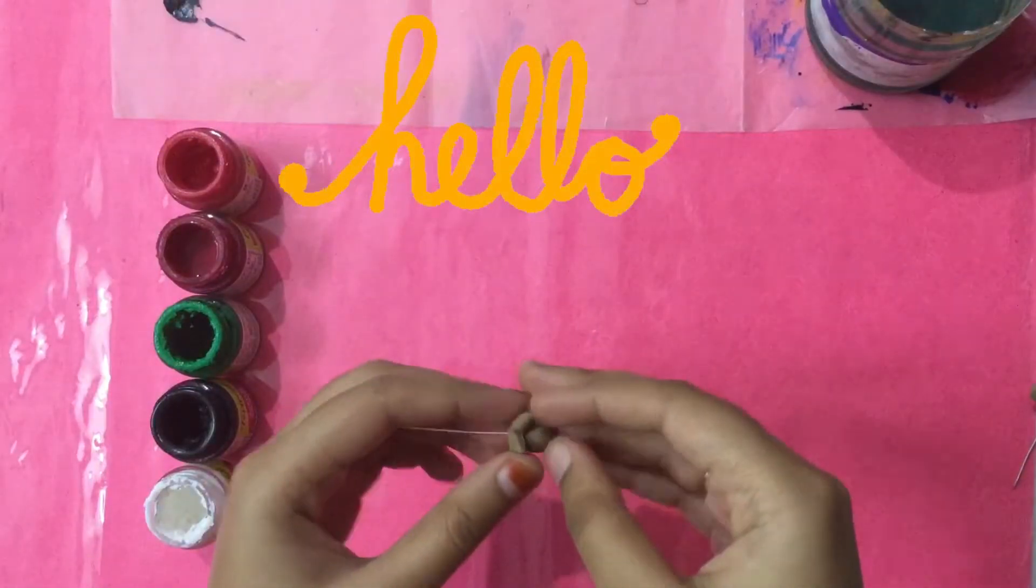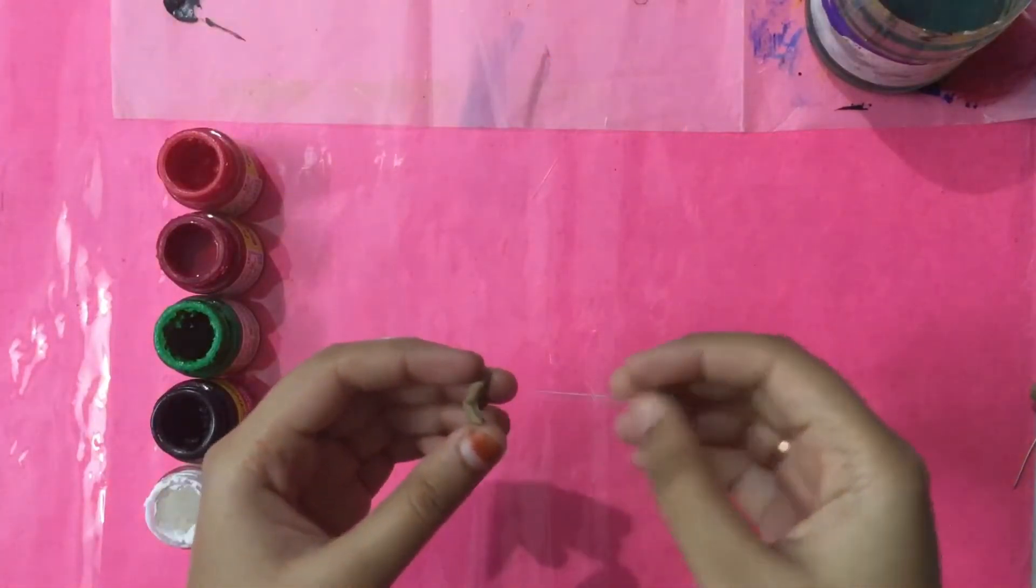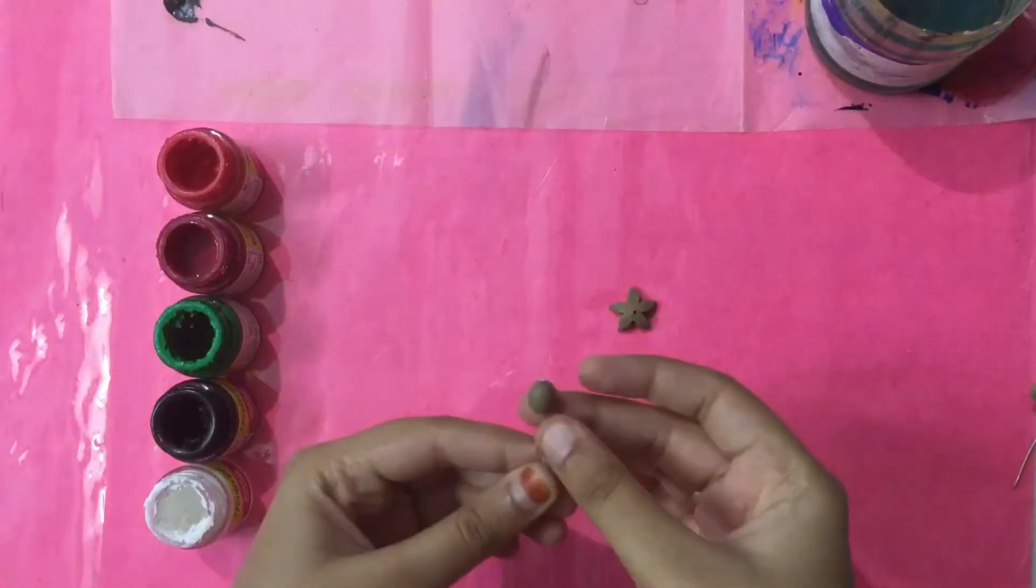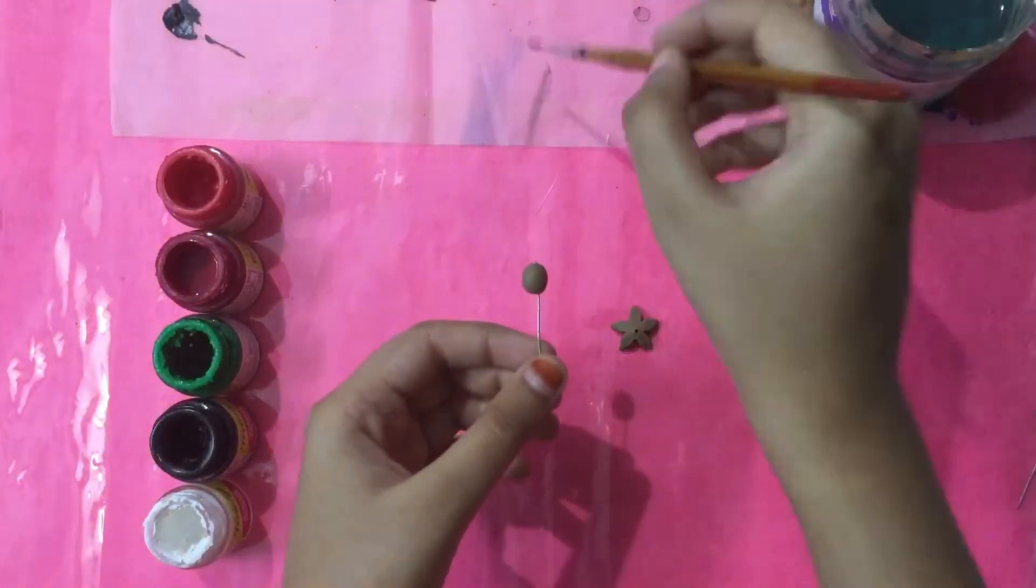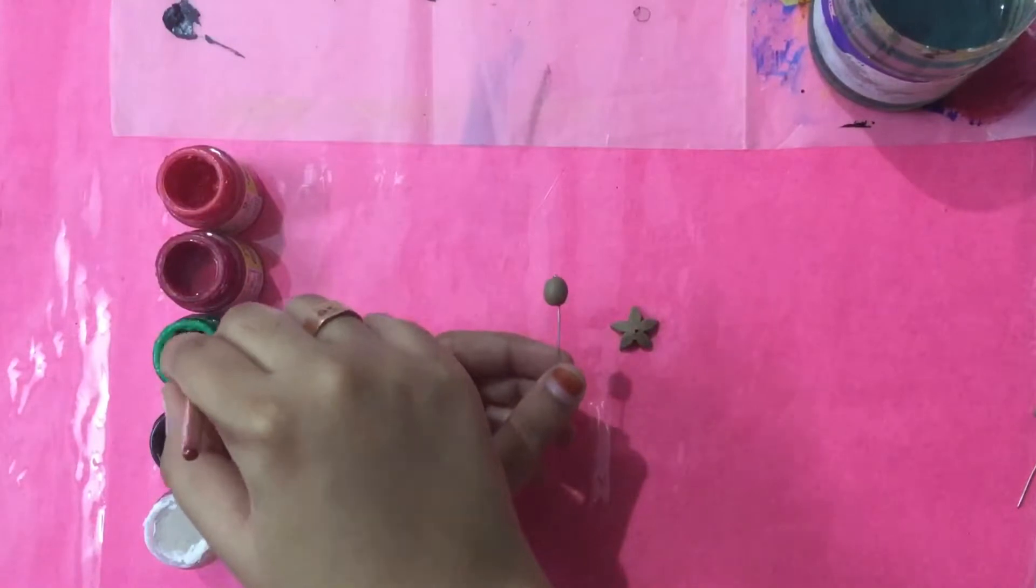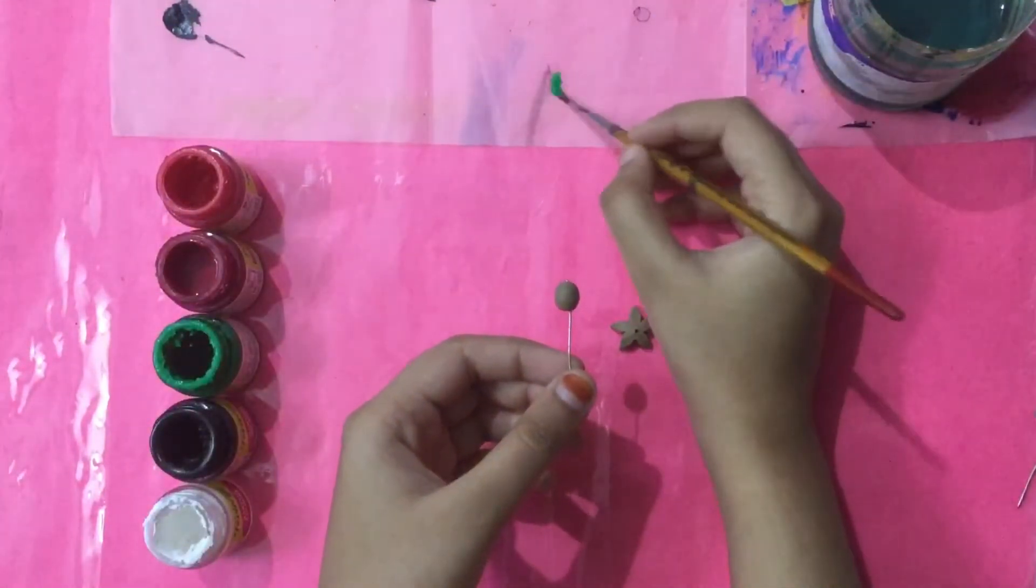Hello everyone, welcome back to the channel. As promised, today we are going to paint these dangles that's a flower and a seed. First we'll paint the seed with light green and then we'll give it some dark green stripes.